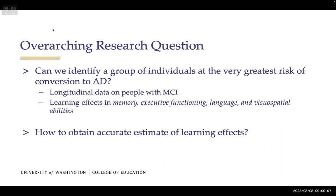The overarching research question is: can we identify a group of individuals at the greatest risk of conversion to AD? We want to leverage longitudinal data on people with MCI, checking learning effects in four cognitive domains: memory, executive functioning, language, and visuospatial abilities. The hypothesis is that people with no or negative learning effects — decrements in cognitive abilities over time or little improvement compared to others — may be at higher risk of conversion from MCI to AD.